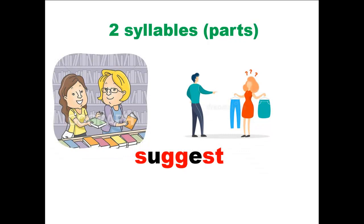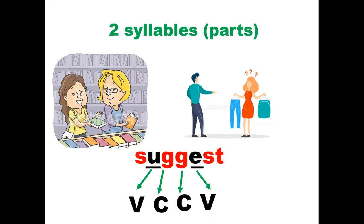Suggest — to mention an idea, to mention an opinion, to tell what you think. You can suggest a book to a friend or suggest something to wear. Here are the two vowel sounds. The pattern is: first vowel sound, another consonant, another consonant, and the last vowel sound. So this word follows the VCCV pattern and should be divided between the consonants. It's made up of two syllables.